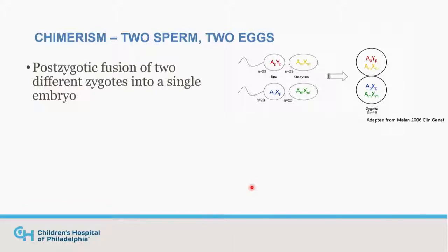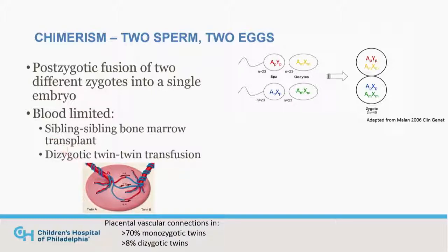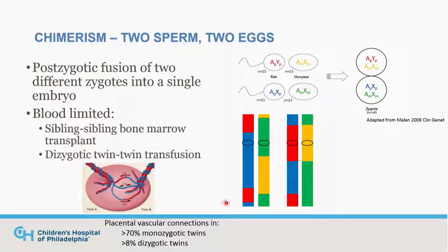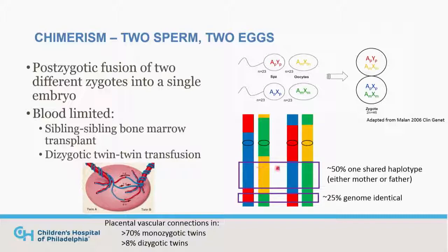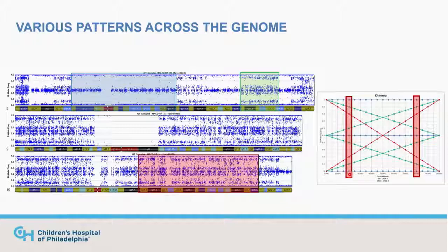Tetragametic chimerism involves two sperm and two eggs — normally two independent fertilizations that fuse into one individual. The same pattern can also be seen with sibling-sibling bone marrow transplant or twin-twin transfusion, often due to placental vascular connections. When we look at chimerism, there will be parts of the genome where both parents are shared, parts where only one parent is shared, and parts where no parents are shared — a mixture of blue, blue-plus-green, and blue-plus-green-plus-red patterns.